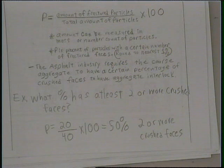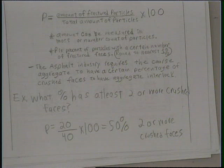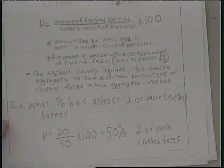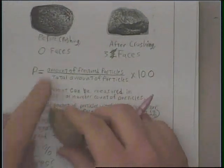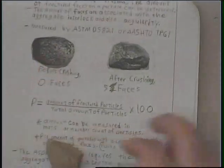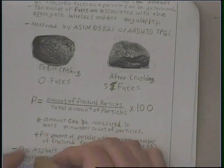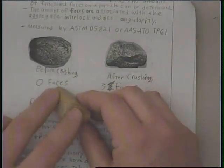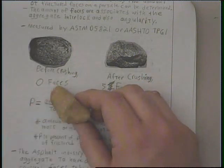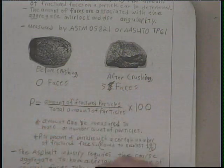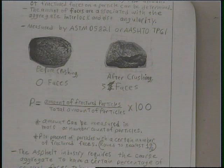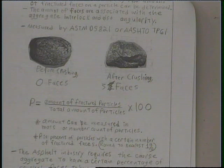Crushed faces are especially important in the asphalt industry. Unlike concrete, they'll take river rock — which is naturally smooth — put it through a crusher so it has faces, and this creates aggregate interlock. That aggregate interlock is a huge deal for the durability of your asphalt structure.